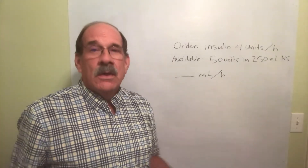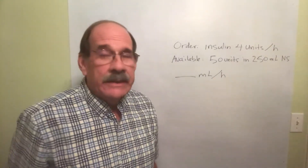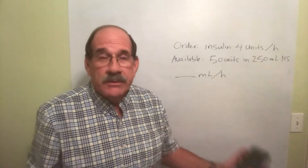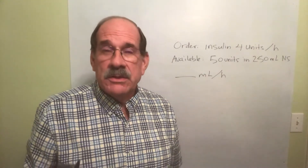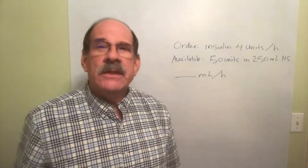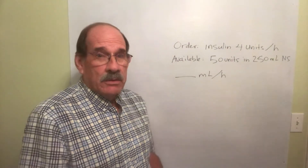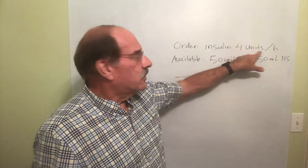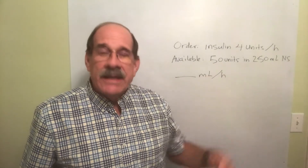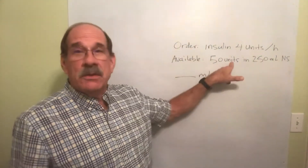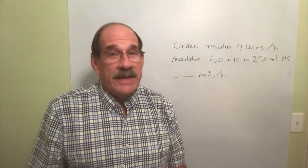Here's something slightly different. We've done insulin before — you give insulin as an injection, and you've had problems like giving a patient a certain number of units and marking the syringe. But this is not with a syringe; this is an IV. In this case, we're going to give four units per hour in an IV drip, and we've got 50 units of insulin dissolved in 250 milliliters of IV fluid.